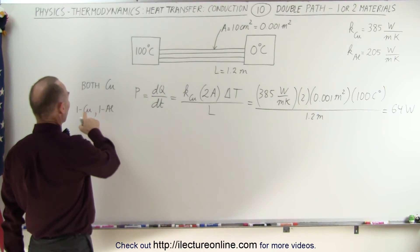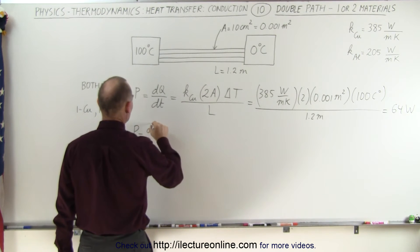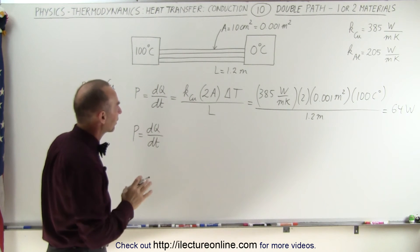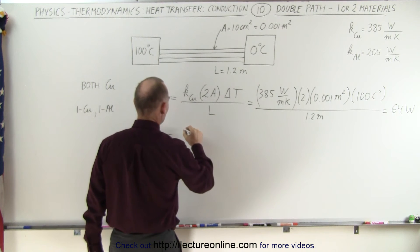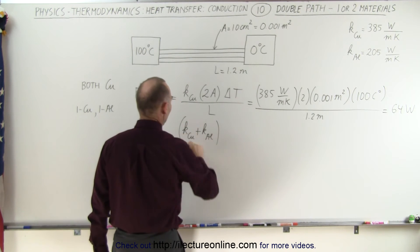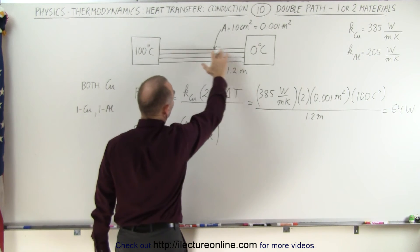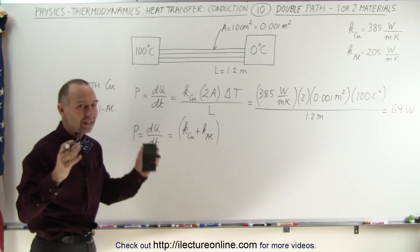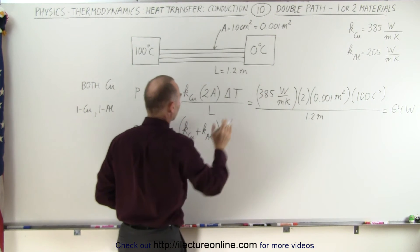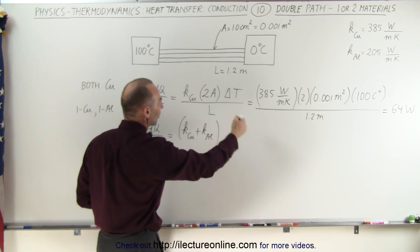Now let's do it for the case where one is copper and the other one is aluminum. We use the same equation — power equals dQ/dt — but now we have two different coefficients for the heat conductivity constant. So this is going to be the sum of the two: K for copper plus K for aluminum. After all, we could calculate the heat transfer through each one separately and simply add the two together. Since the difference in temperature remains the same — this side is kept at 100 degrees centigrade and the other at 0 degrees centigrade — we can simply add the two coefficients of heat conductivity.